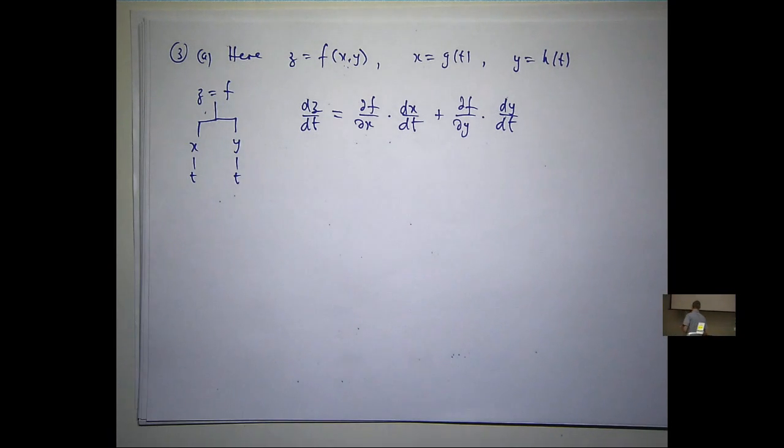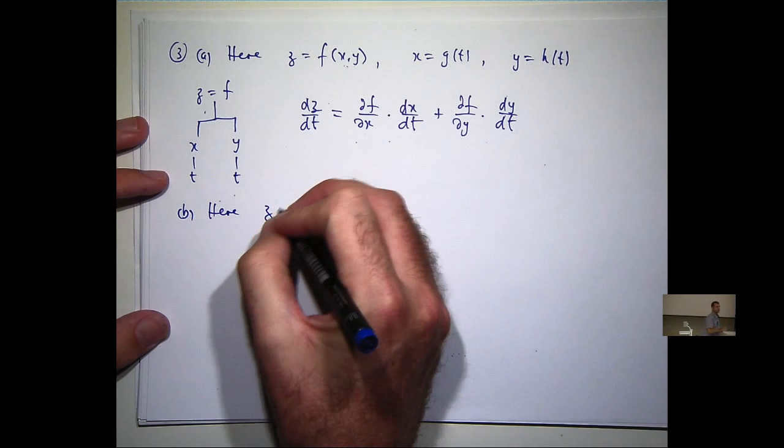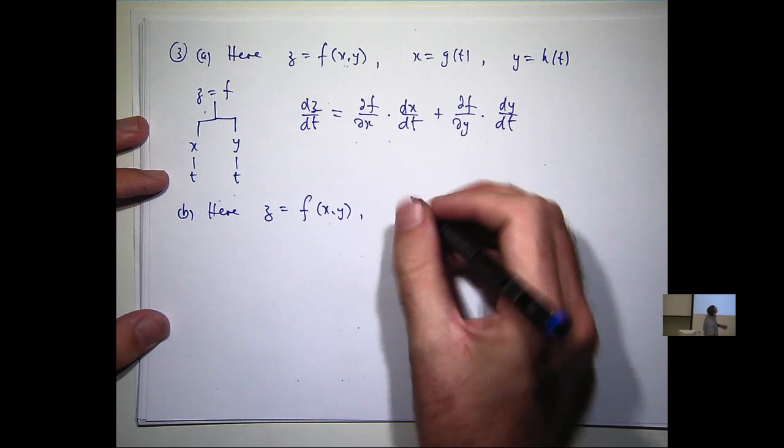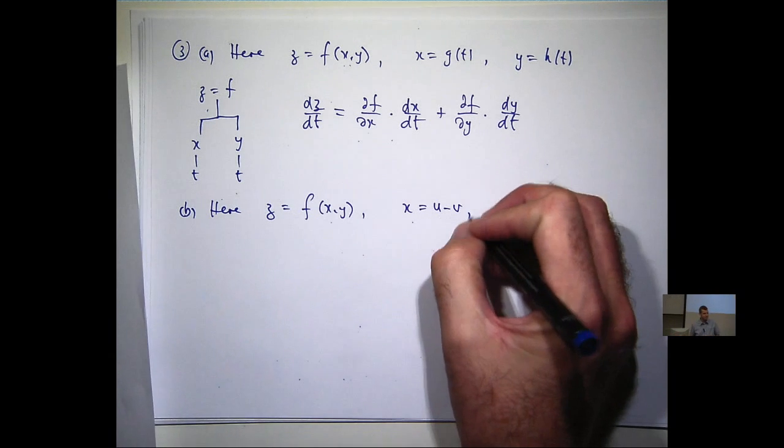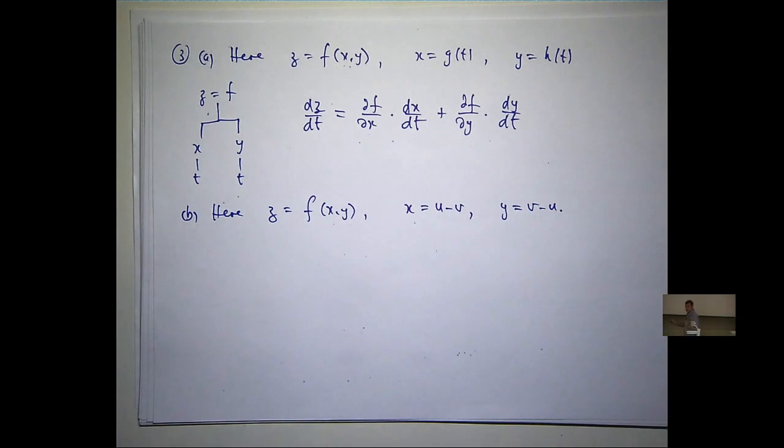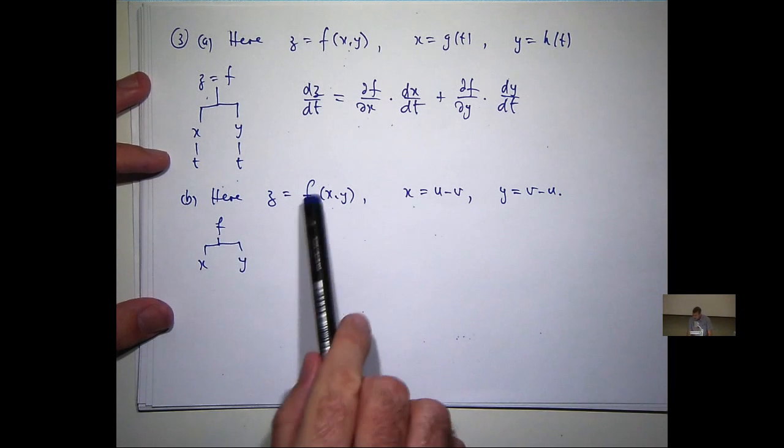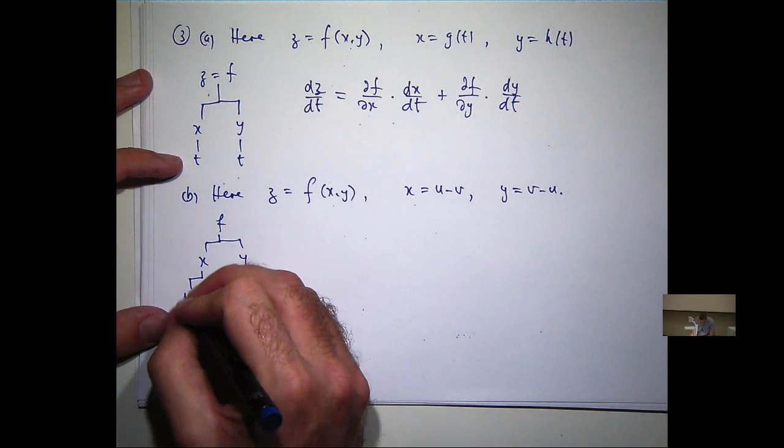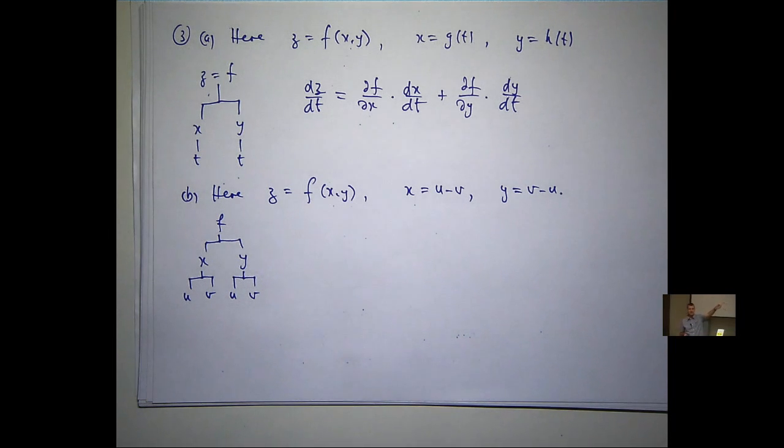Well, it's just the chain rule again. So f depends on two things. x depends on two things as well, u and v. So does y. So let's calculate the partial derivatives in our equation, z sub u and z sub v, and then we'll show that the equation balances.